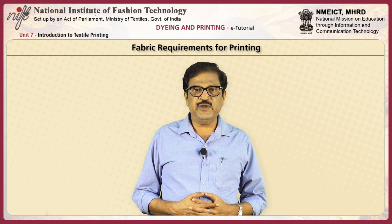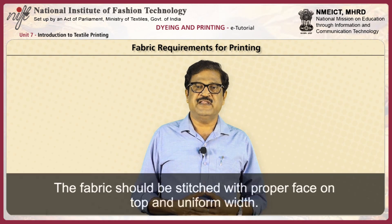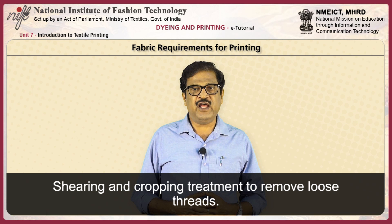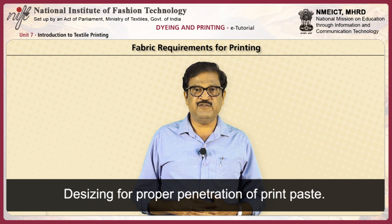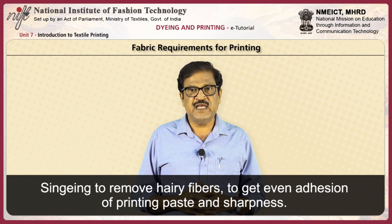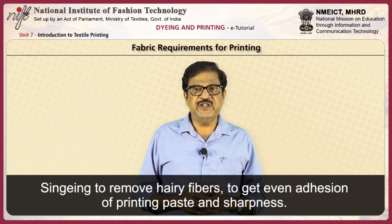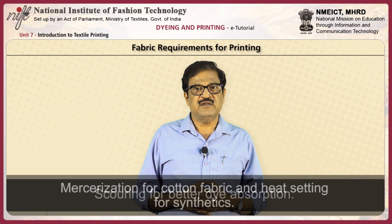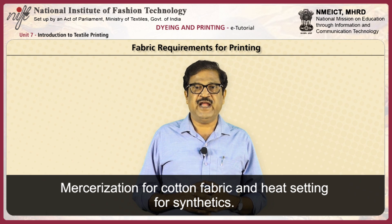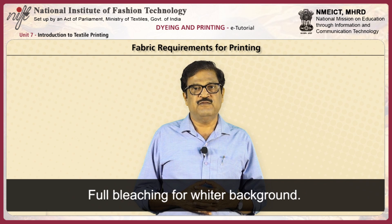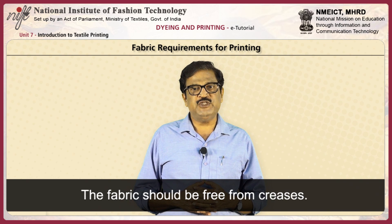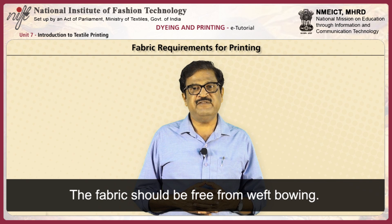For printing, the following are the general requirements of fabrics. The fabric should be stitched with proper face on top and uniform width. Shearing and cropping treatment is given to remove loose threads. Desizing is necessary for proper penetration of the print paste. Singeing removes hairy fibers to enable uniform hydration of printing paste and sharpness. Scouring gives better dye absorption. Mercerization is given for cotton fabric and heat setting for synthetic fabrics. Full bleaching is suitable for a whiter background. The fabric should be thoroughly dried, free from creases and free from weft bowing.